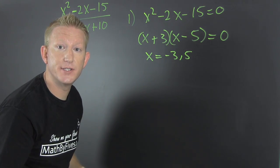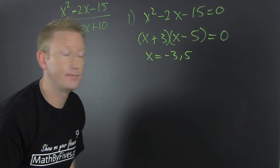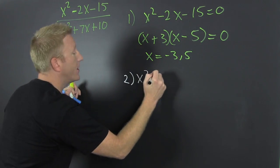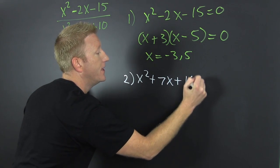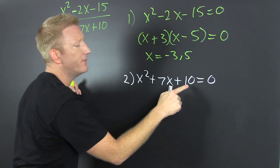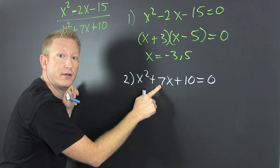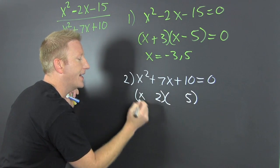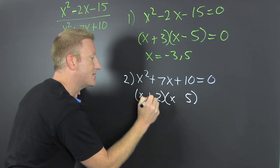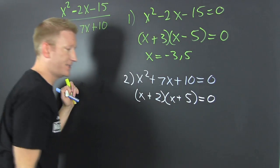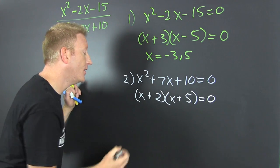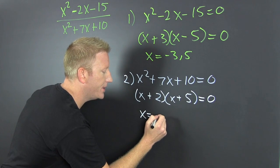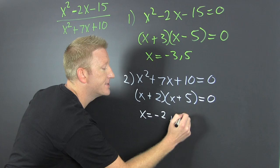Step two: find the zeros of the denominator — that's gonna give us our vertical asymptotes. I take that denominator, x squared plus 7x plus 10, and set it equal to zero. I'm looking for the factors of 10 that add to be 7 — that's 5 and 2. So (x + 2)(x + 5) = 0; the signs are both positive. I find that my vertical asymptotes are gonna be at x = minus 2 and x = minus 5.